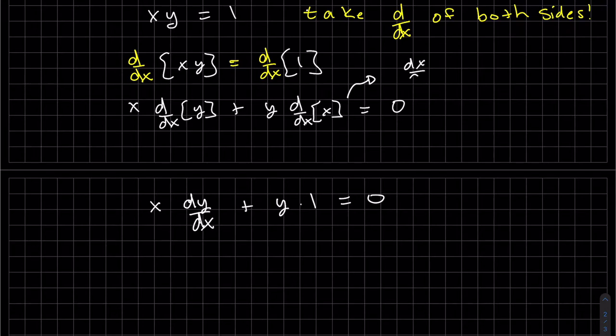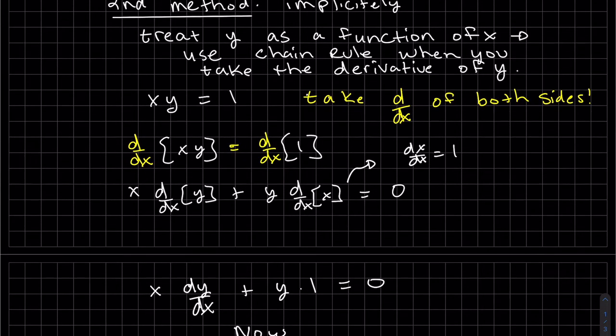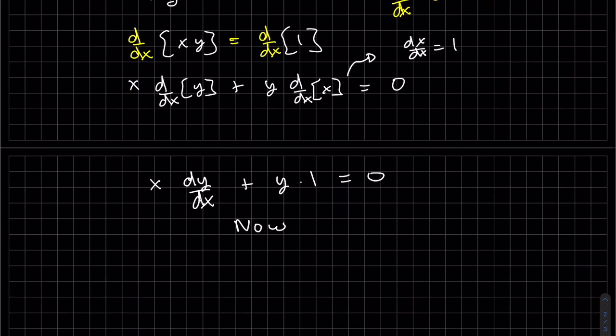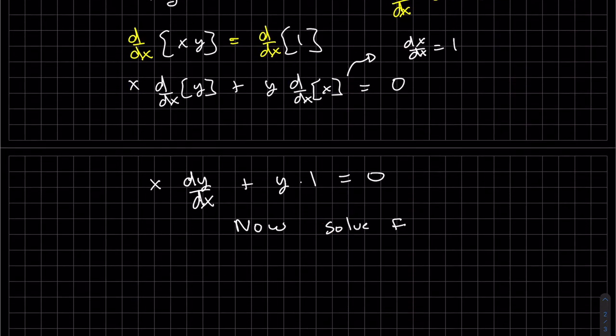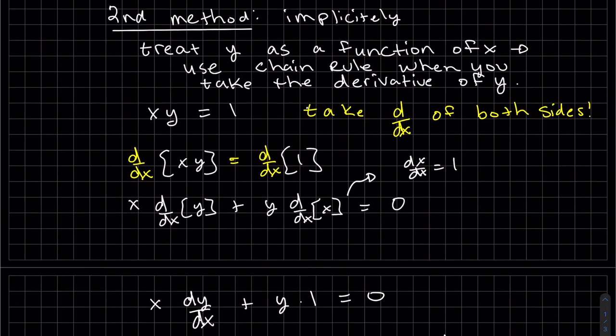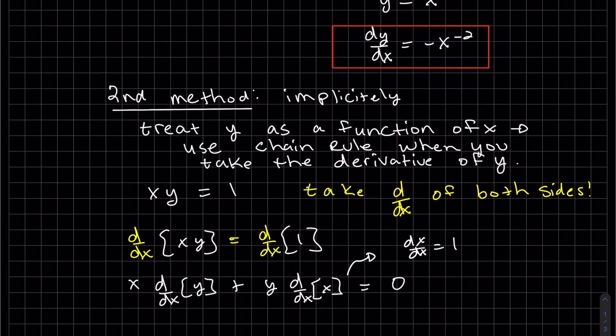Chain rule: dy/dx times dx/dx, the derivative of x in terms of x is one. Now we're wanting to find dy/dx, so we solve for dy/dx.